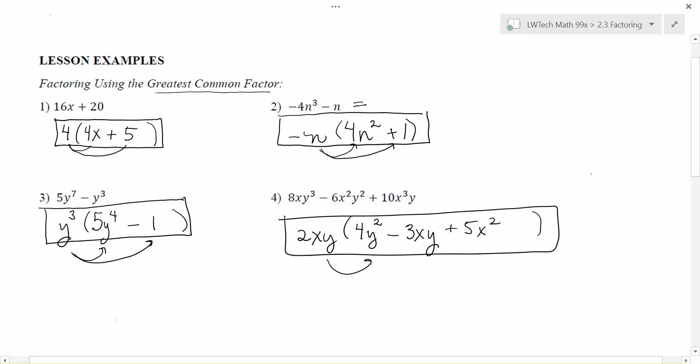Again, I highly recommend going ahead and distributing that out. Look at each of those three multiplications and make sure you get the original expression back again. Here, 2xy times 4y² gives me 8xy³. 2xy times -3xy gives me -6x²y², because of the y times y. And for the last part, I need that +5 to get a +10 there. I need 2 more x's so I have the x², and then the y is exactly what I need. And I end up with 10x³y, which is what I had in my original problem.